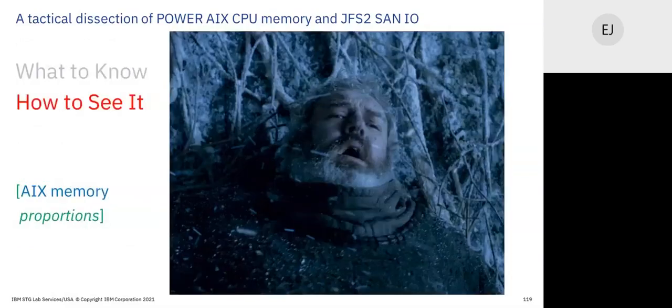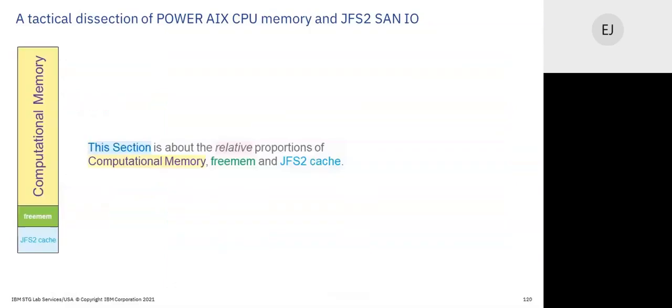Moving on to memory proportions. We'll talk about the relative proportions of memory: free memory and cache. We'll get to the numbers in the next session — let's just get the concepts and picture in our mind here. Lego blocks represent the proportions of memory.